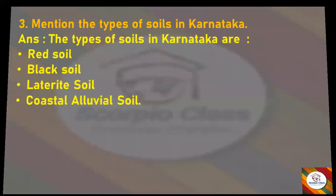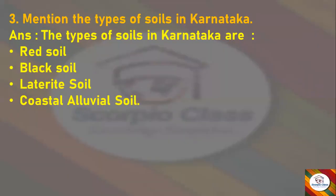Next question: Mention the types of soils in Karnataka. Answer: The types of soils in Karnataka are Red Soil, Black Soil, Laterite Soil, and Coastal Alluvial Soil.